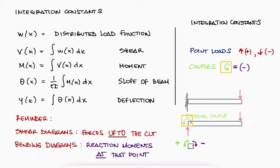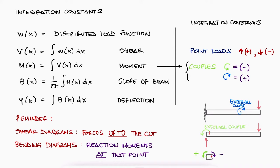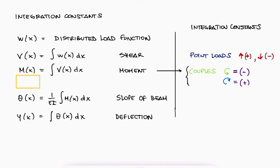Therefore, a counterclockwise and therefore positive external couple will cause a clockwise and therefore negative reaction at the cut immediately after passing by the external couple. For this reason, the bending moment function m(x) will have integration constants from the integration of v(x) that correspond to the external couples, including reaction moments. Counterclockwise/positive external moments will cause clockwise/negative reactions and are therefore subtracted in m(x). On the contrary, clockwise/negative external moments cause counterclockwise/positive reactions that are added with positive signs to m(x). We call the integration constants from m(x) to the slope function theta(x) as C1.